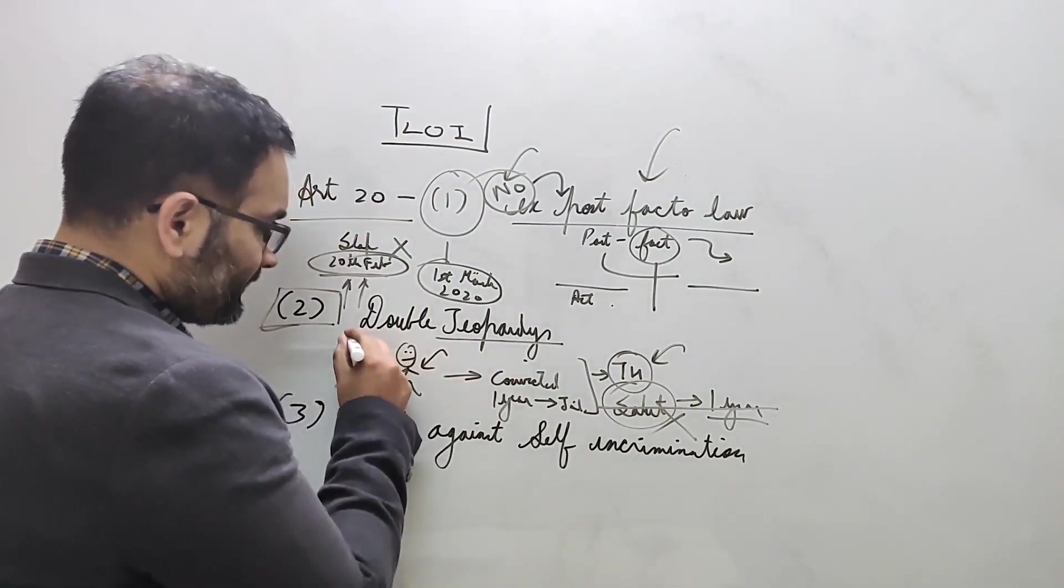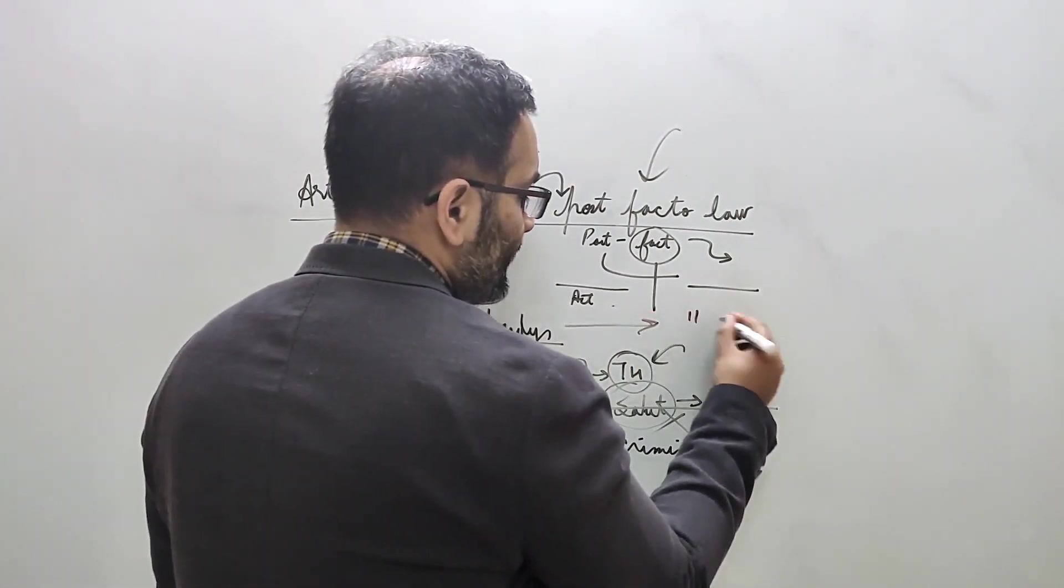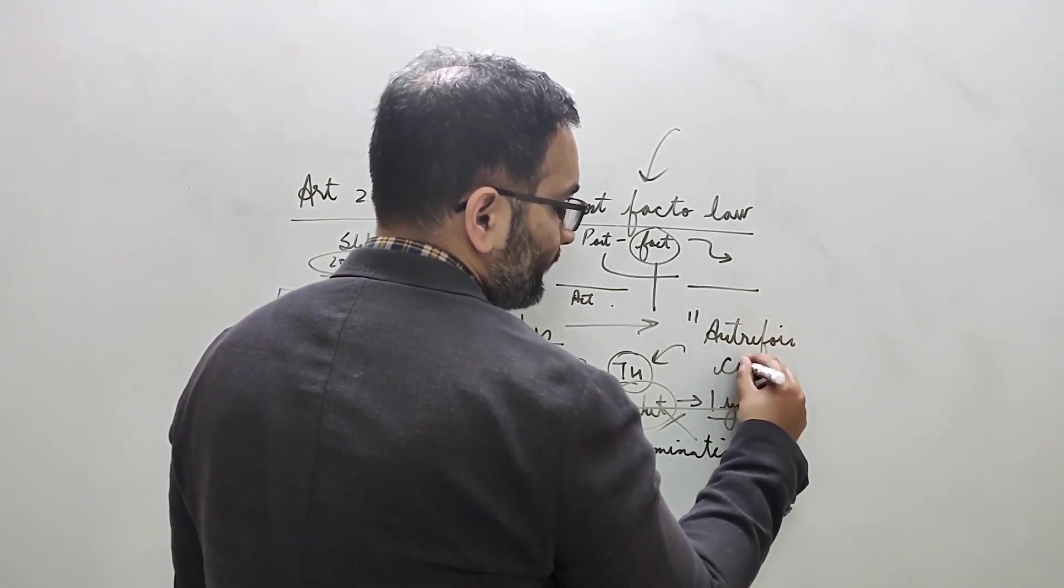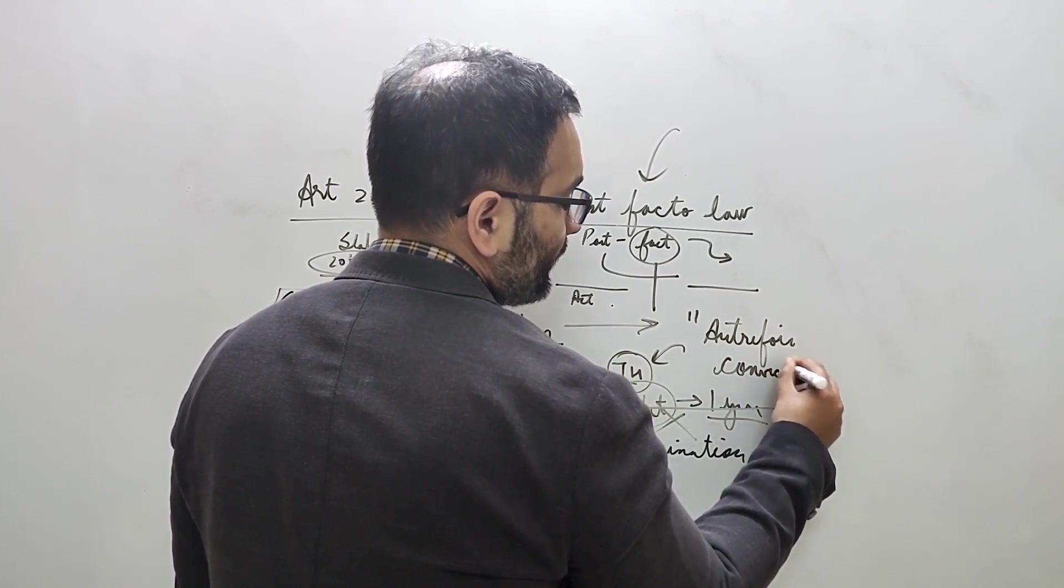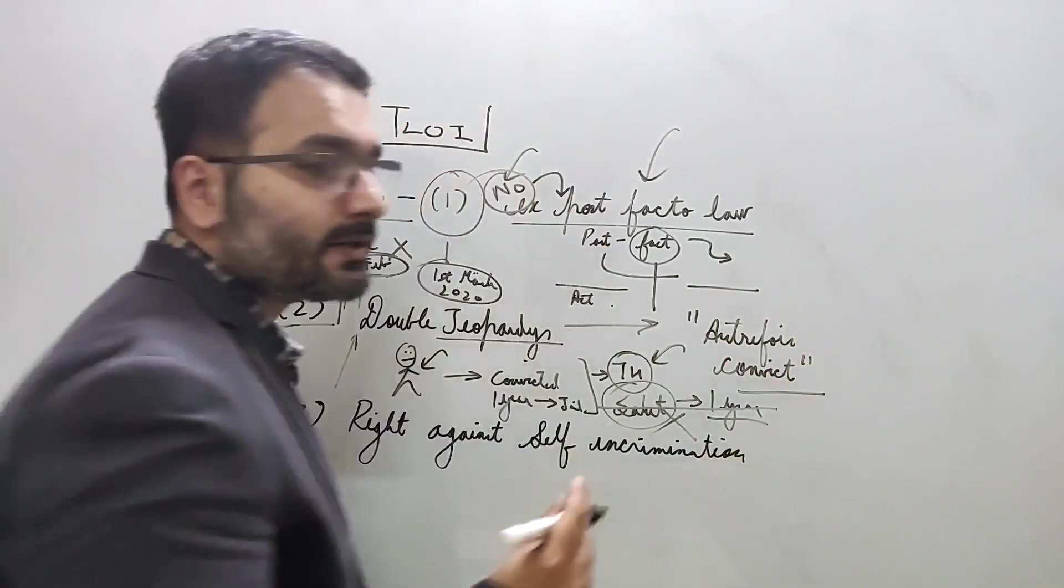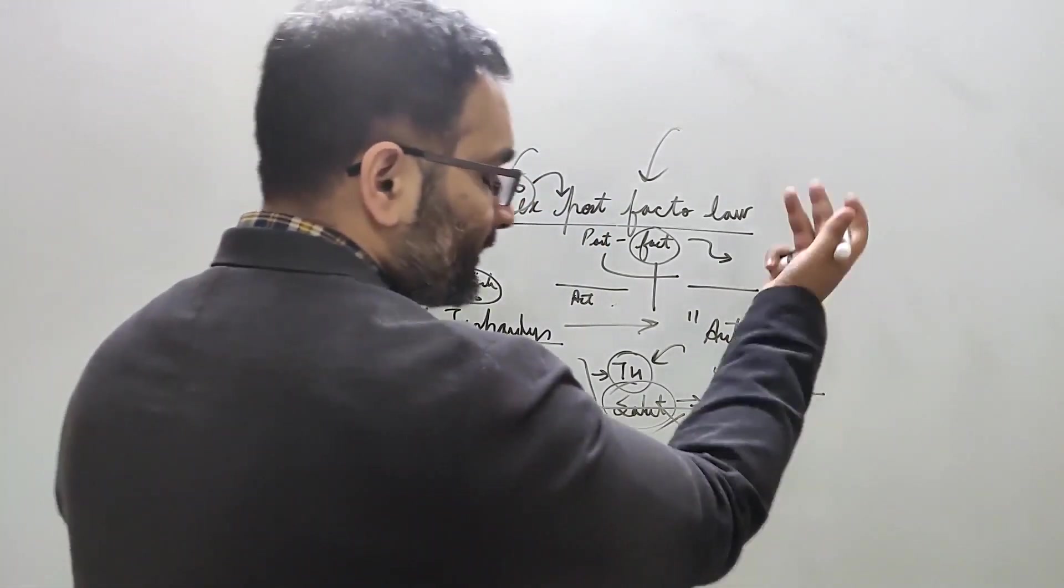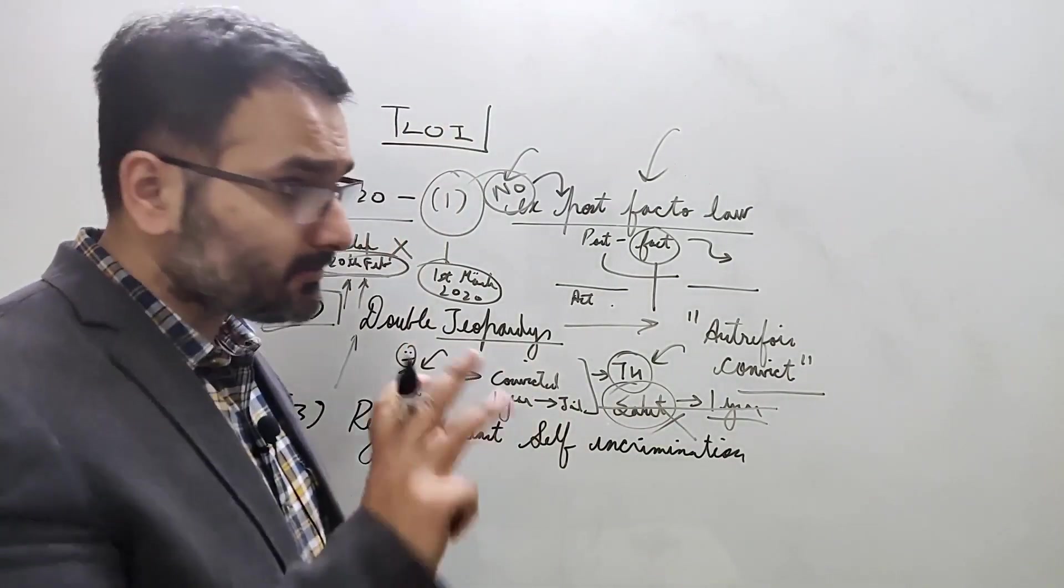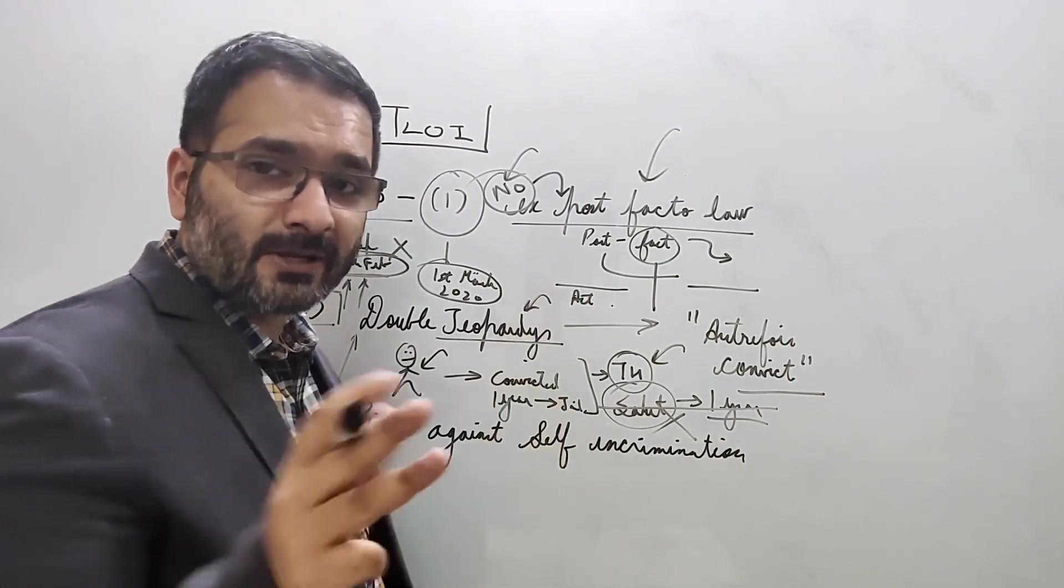Doctrine of double jeopardy. The legal maxim and legal term that appears in questions is 'autrefois convict' - or if you want to be more English, 'autrefois convict.' I have already been convicted previously for the same thing. So double jeopardy means being in trouble twice.